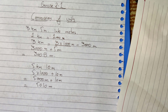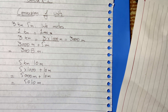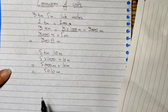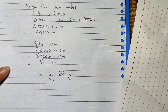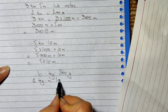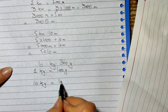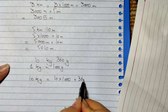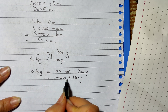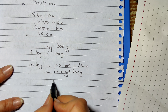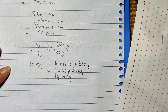That was kilometers converted into meters. Now the next example: we convert kilograms into grams. We take 10 kilograms and 360 grams, convert into grams. You know that 1 kilogram is 1000 grams. So we do 10 into 1000 plus 360 grams, that is equal to 10,000 plus 360 grams, which equals 10,360 grams. That is our answer.